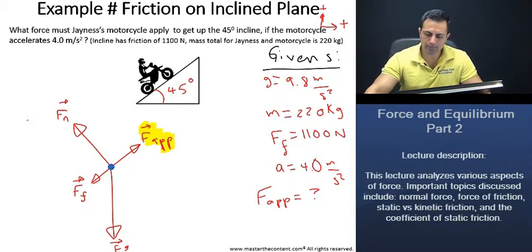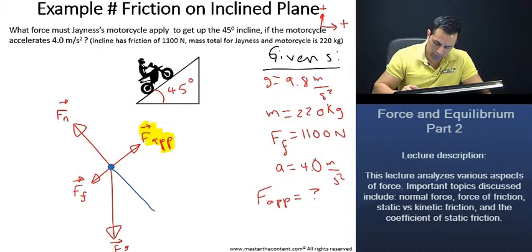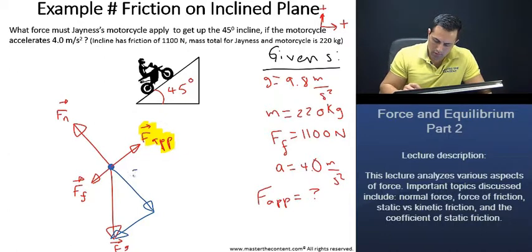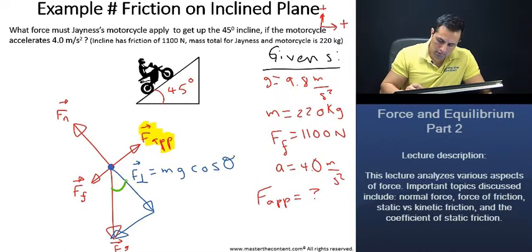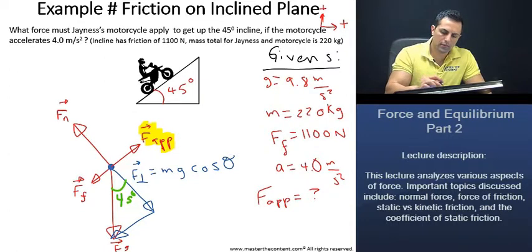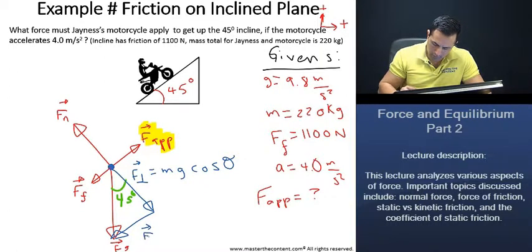Because the axis here is rotated, we'll go ahead and break the force of gravity down into its components. The perpendicular component for the force of gravity is just going to be mg cosine theta. And before I forget the angle in here, that is also just 45 degrees. And the parallel component to the force of gravity, that is just going to be mg sine theta.